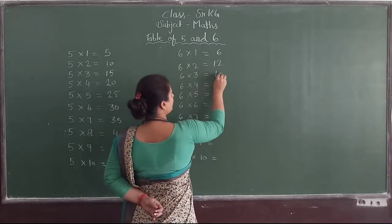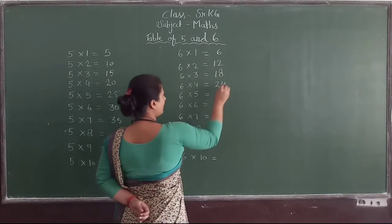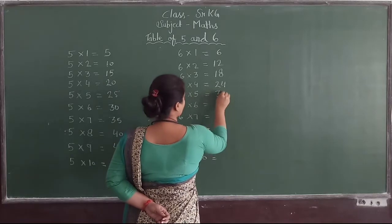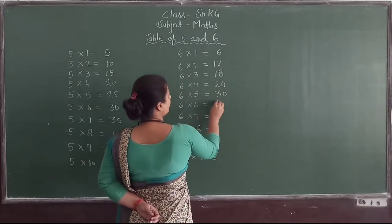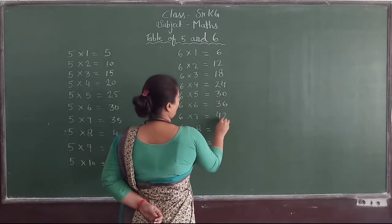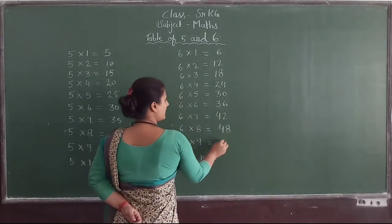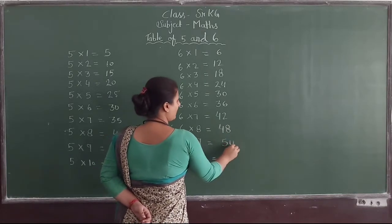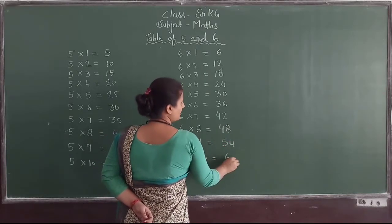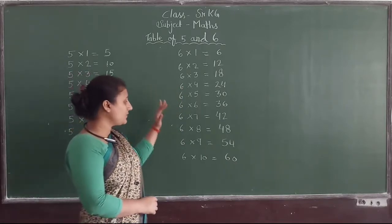6×3=18, 6×4=24, 6×5=30, 6×6=36, 6×7=42, 6×8=48, 6×9=54, 6×10=60. Okay, you have to learn.